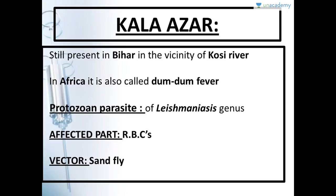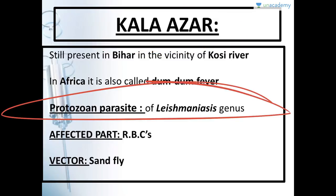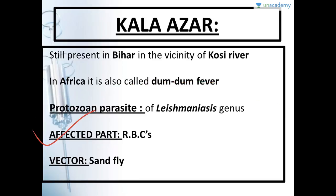Kala Azar is still present in Bihar, in the vicinity of the Kosi River. In Africa, this disease is known as Dum Dum Fever — so if an exam asks which disease is known as Dum Dum Fever, the answer is Kala Azar. The protozoa name is Leishmania. The affected part is again RBC. The vector by which it gets transmitted is the sandfly.